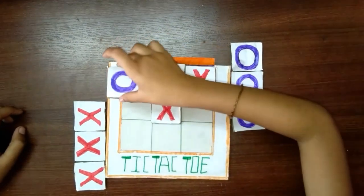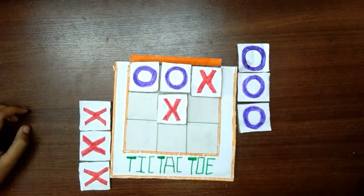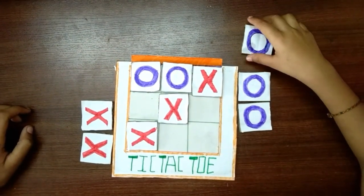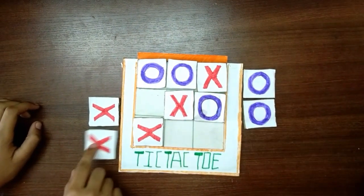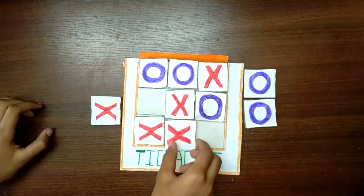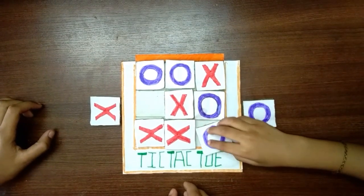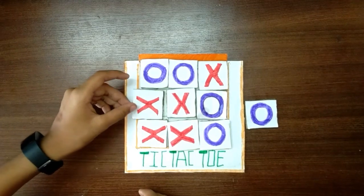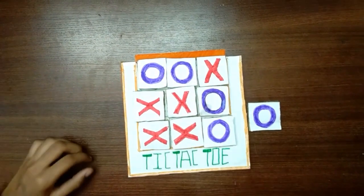Right here. I got one point. Oh, she is blocking me. Okay. So I won. Yay!